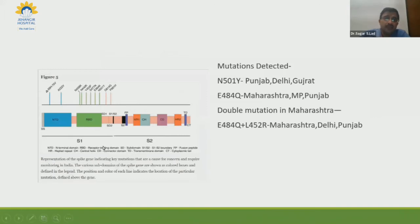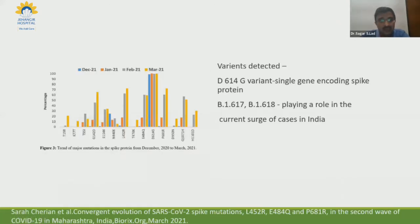As per WHO, the spike protein has an NTD (N-terminus domain) and RBD (receptor-binding domain). In the receptor-binding domain, mutations N501Y and T848Q are responsible for the strength of mutation seen in Maharashtra and Punjab — this double mutation makes the virus more pathogenic. Similarly, variants reported by CDC and WHO in March 2021 show that D614G, B.1.617, and B.1.618 play an important role in the current surge in India.